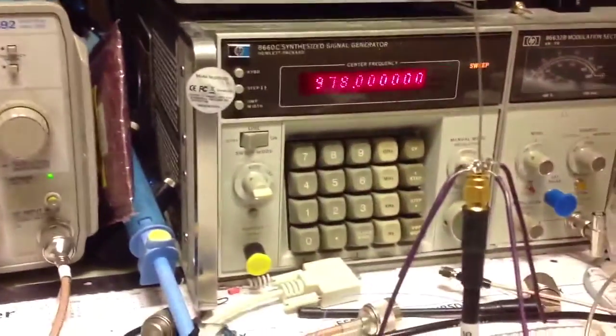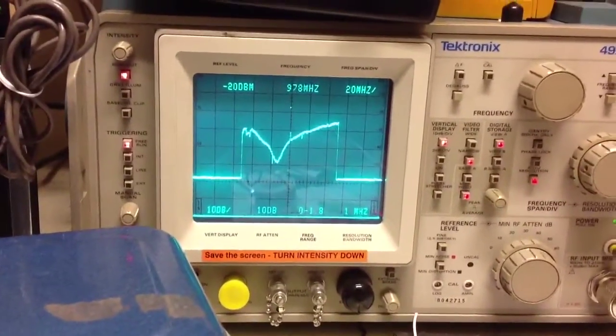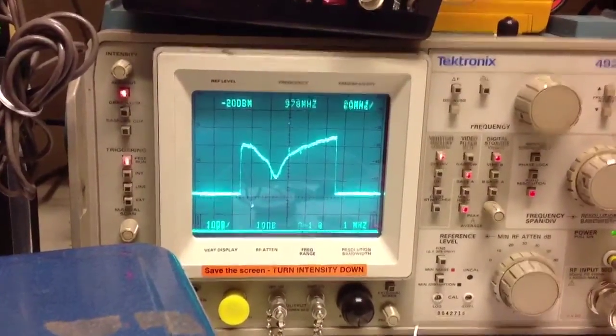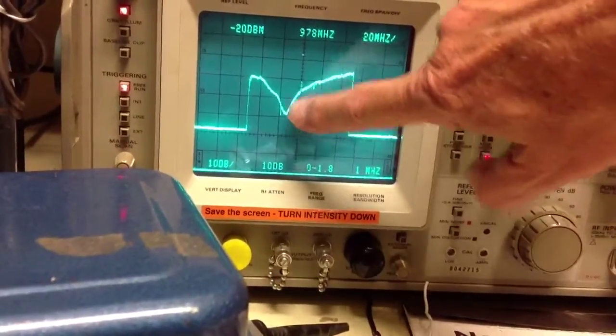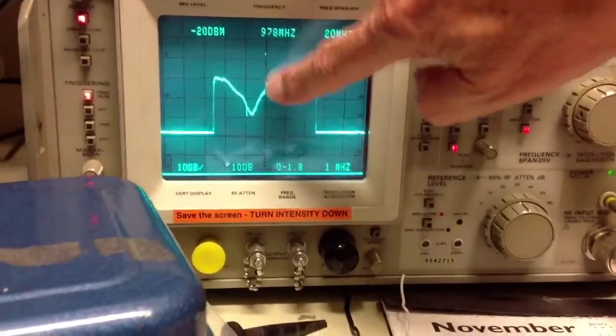So the signal generator in this case was programmed to 100 megahertz sweep with a center frequency of 978. Spectrum analyzer is on peak hold, and I've got it in the narrow bandwidth mode just to try to clean up the signal some. You can see that the antenna is actually resonant right about here, a little bit below 978, but still offering 20 dB of return loss.